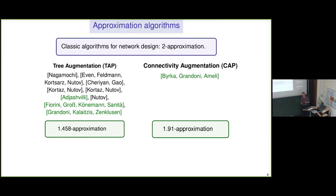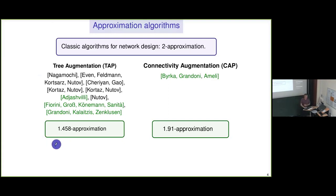There's been a lot of work. Getting a two-approximation is quite easy — there are many classical procedures giving two-approximations, even for the weighted setting. The main goal was to beat this factor of two. This started with TAP first, with a bunch of very interesting papers, and the approximation factor has come down to slightly below 1.5. That last factor is based on LP-based approaches, from work by Fabrizio Grandoni and Christos Kalaitzis, drawing strongly from results by Grandoni, Fiorini, Gross, Koenemann, and Sanità.